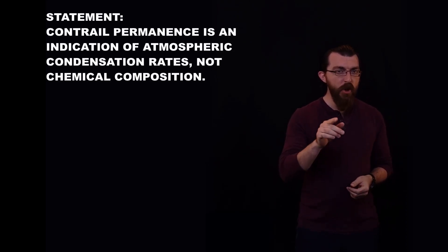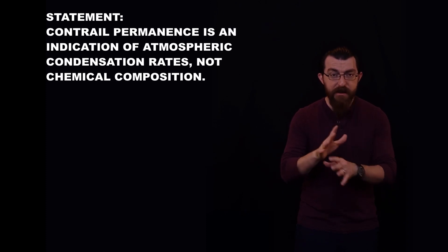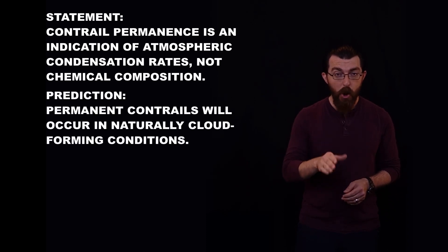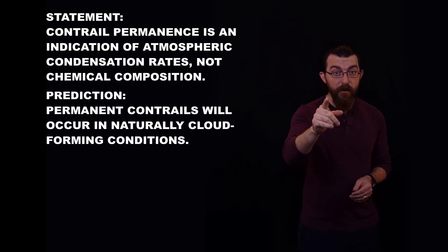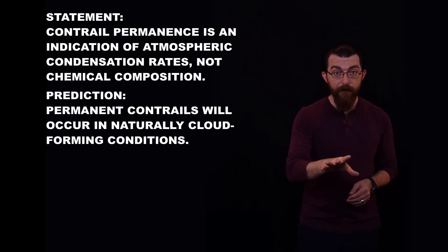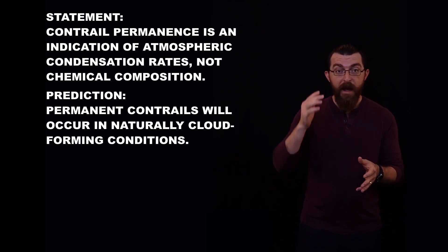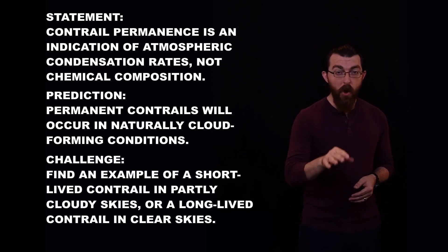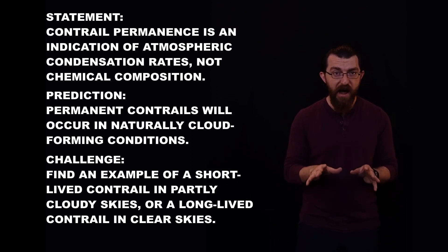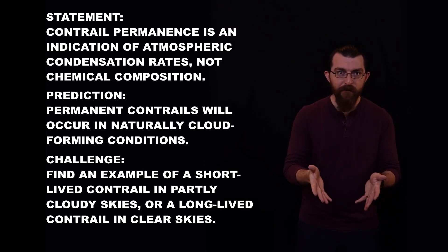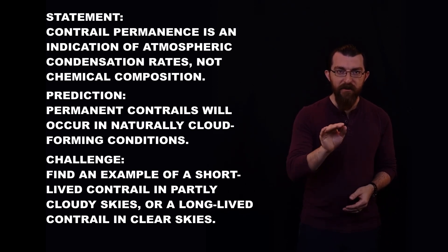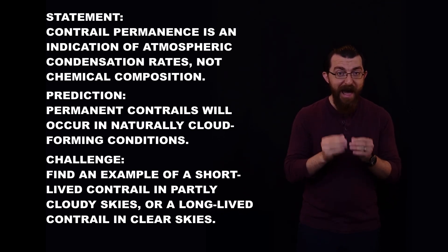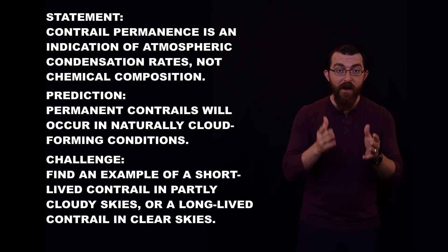I'm going to predict that every time you see a permanent contrail that doesn't immediately fade away, it's in skies that are at least partly cloudy. If you look up in the sky and see a long lasting trail from a jet and your first thought is, that's a chemtrail, I want you to look at the rest of the clouds in the sky, think about why they're not fading away, and think condensation rates. If you want to show me wrong, go find an example of a long lasting contrail in an otherwise perfectly clear sky. Obviously, you'd have to show the whole sky. Even cloudy days have clear patches. If you go out looking, I think you'll find the vast majority of long lasting contrails will be in cloud forming atmospheric conditions, as indicated by the presence of natural clouds.